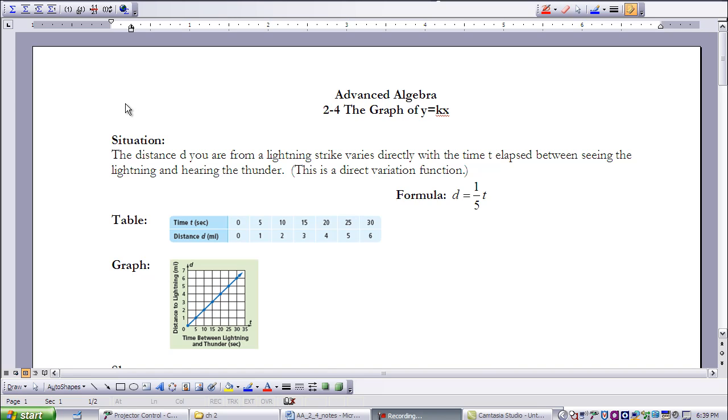Here there's a table of values that are generated, so if it takes you five seconds to see the lightning and to hear the thunder, you then are one mile from the lightning. Another example, if time elapsed is 20 seconds between the time you see the lightning and hear the thunder, you then are four miles away from the lightning.